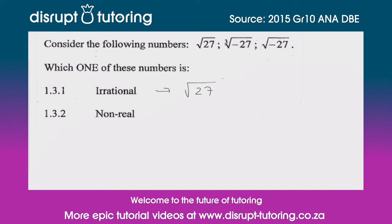Then we move on to 1.3.2, and they've asked us which of these numbers is non-real. Now we know that a non-real number is a negative number that is being square rooted, because it doesn't exist.